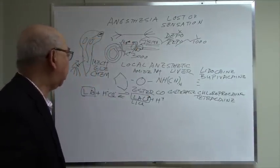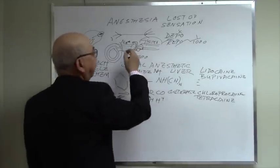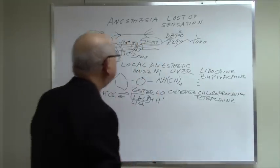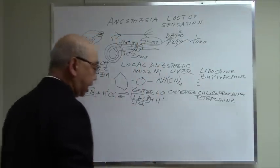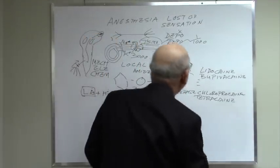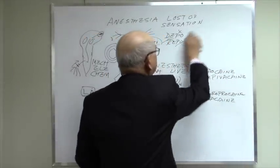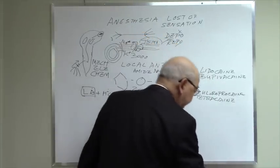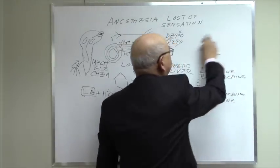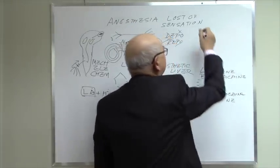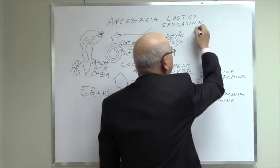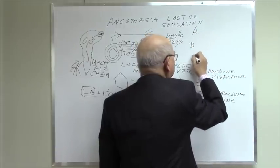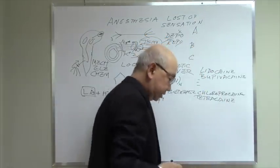So when you stop the influx of sodium, you don't get nerve conduction. Now, nerves can be classified into A, B, and C fibers.